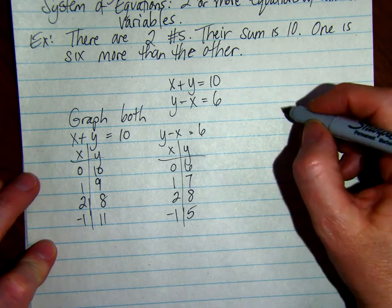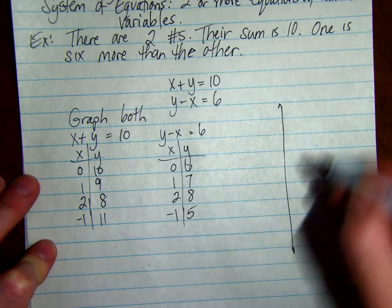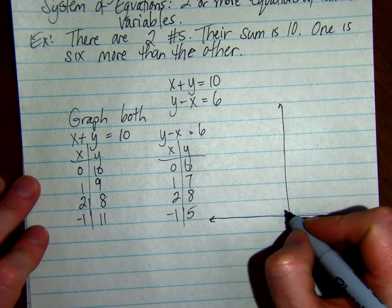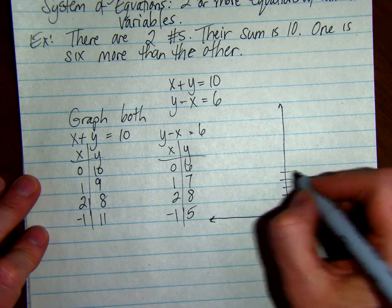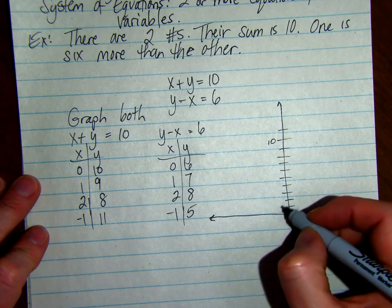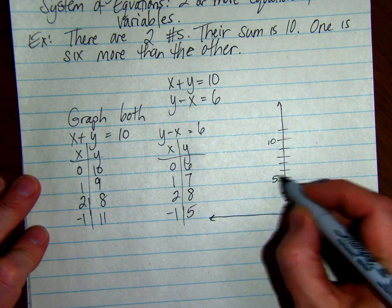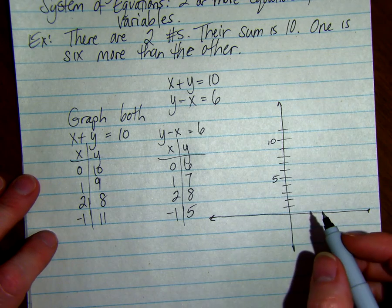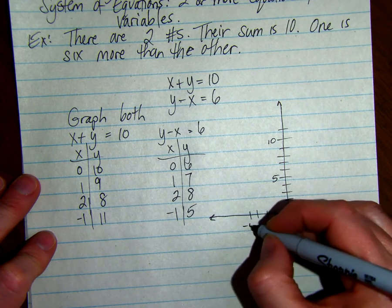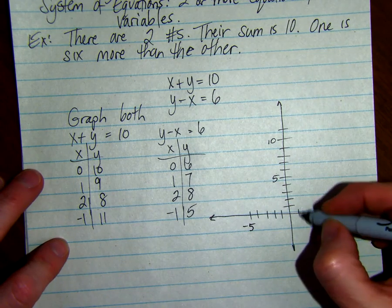We're going to graph both of them on the same set of axes. So we're going to go up to eleven, left to negative five, and right to five.